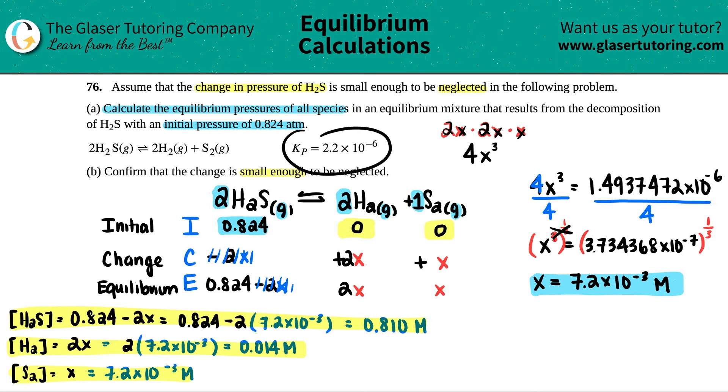Remember, a really, really small Kp just means that you have, majoritively, reactants at equilibrium. So if you are ending with reactants, I mean, we're ending with 0.81, and we started with 0.824. That, you know, signifies that, yeah, we have a Kp that's really, really low, and we can get rid of that change.